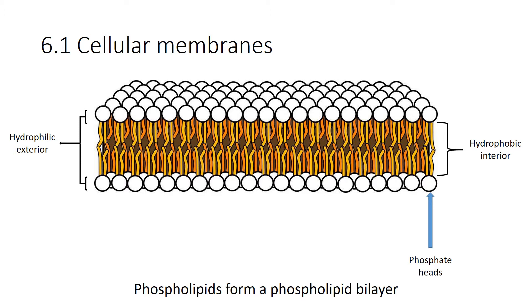These membranes actually form on their own. Those hydrophobic fatty acid tails don't like to be anywhere near water, so they turn around and form toward themselves, kicking those hydrophilic phosphate heads out toward the water.